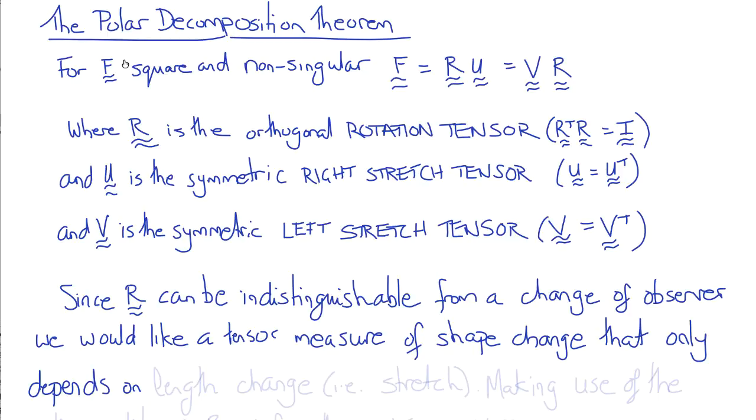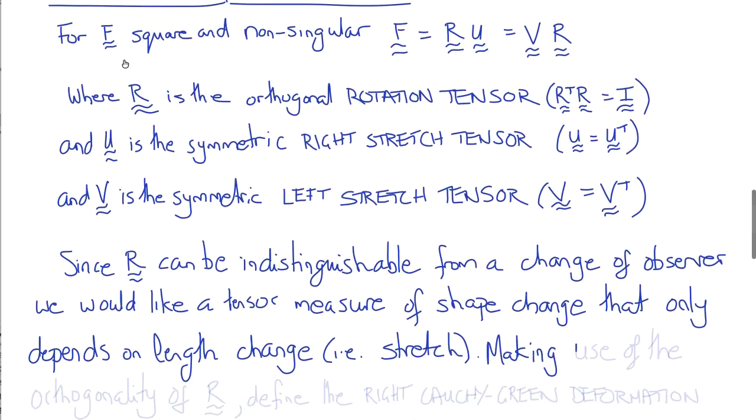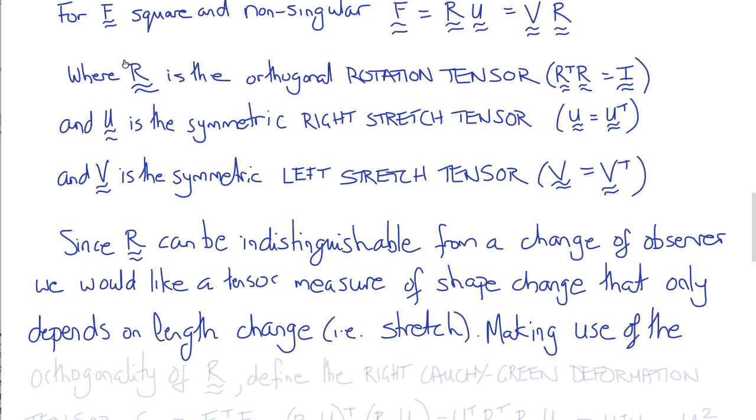Now, U and V could be used, but the polar decomposition theorem is difficult to compute. So instead, what we do is we square up F and make use of the orthogonality of the rotation to eliminate it in the product.